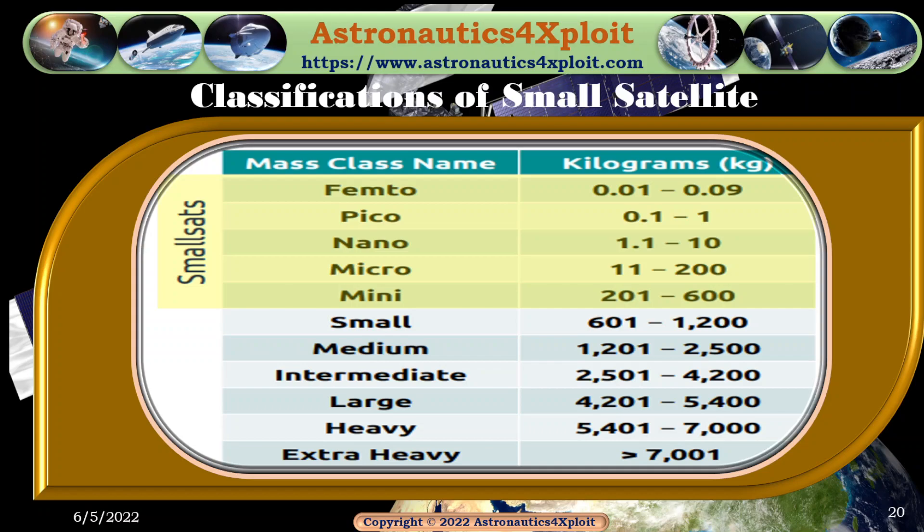These are some of the classifications of small satellites: the femto satellite with a mass of 0.01 to 0.09 kg, pico satellite 0.1 to 1 kg, nano satellite 1 to 10 kg, micro satellite 11 to 200 kg, and mini satellite 201 to 600 kg.